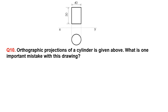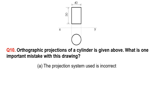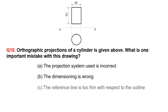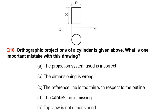Orthographic projections of a cylinder is given above. What is one important mistake with this drawing? A. The projection system used is incorrect. B. The dimensioning is wrong. C. The reference line is too thin with respect to the outline. D. The center line is missing. E. Top view is not dimensioned.